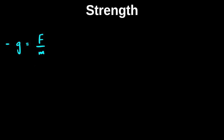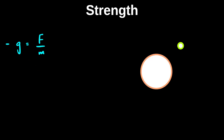Let me show this through a diagram. If this is a very large mass M and if this is a smaller mass m which rests in the gravitational field of this object, then we define the gravitational field strength as the force exerted per unit mass. We have previously talked about how to quantify this force using Newton's law of gravitation, so the force can be written as GM upon R squared.